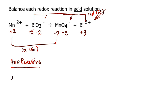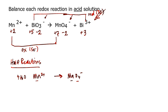Starting with the oxidation half-reaction: Mn²⁺ goes to the permanganate ion MnO₄⁻. First, balance everything by mass. There's one manganese on either side — that's fine. But I need 4 oxygens on both sides, so I'm going to add 4 water molecules to the left side. That gives 8 hydrogens on the left, so I add 8 hydrogen cations (protons) on the right to balance. Now everything is balanced by mass.